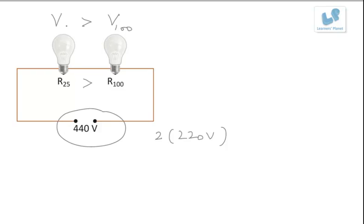Now if this is the case, that means the voltage across 25 watt is definitely more than 220 volts and voltage drop across 100 watt will be less than 220. So this bulb will fuse - the 25 watt bulb will fuse.